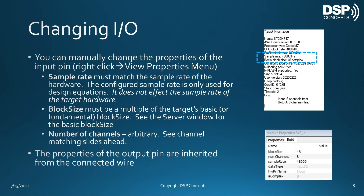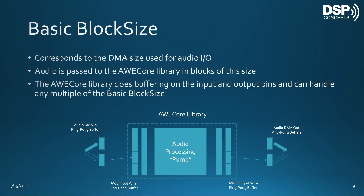That means you can run processing at any multiple of 48 samples. The basic block size corresponds to the DMA size used for all audio I/O, which is built into the firmware of the BSP for your target. Audio is passed to the AWE Core library in blocks of the basic block size, and the library does internal buffering on the input and output pins to handle any multiple of the basic block size — so you can adjust the block size without recompiling.